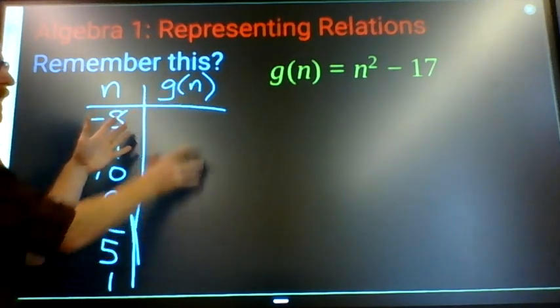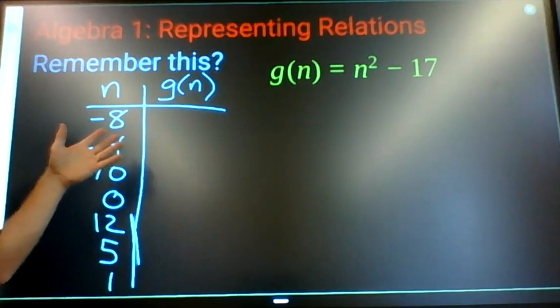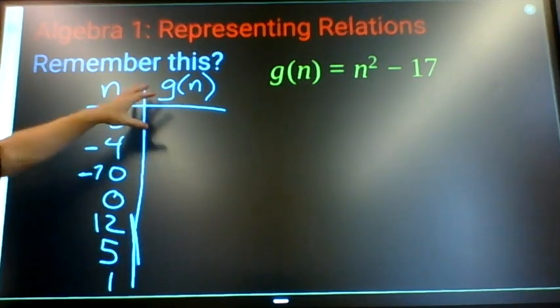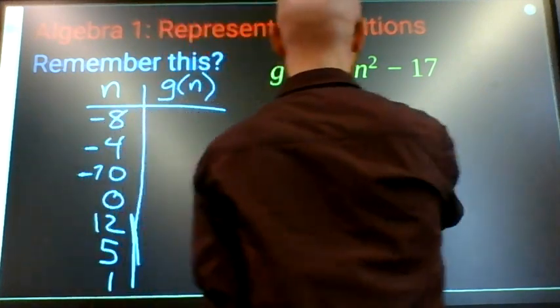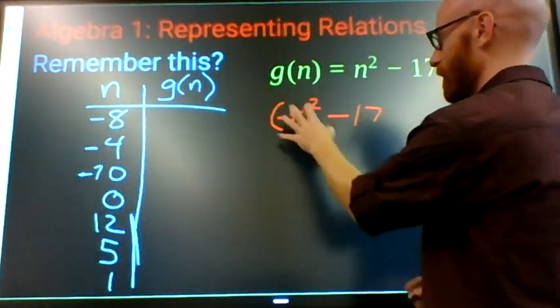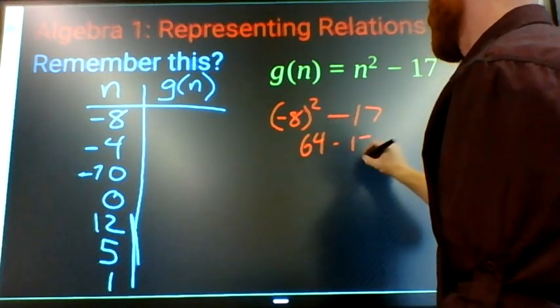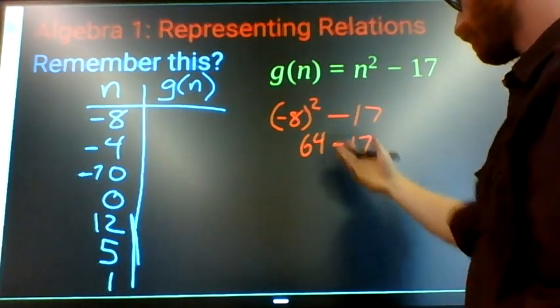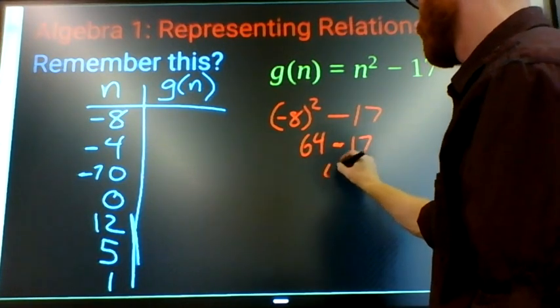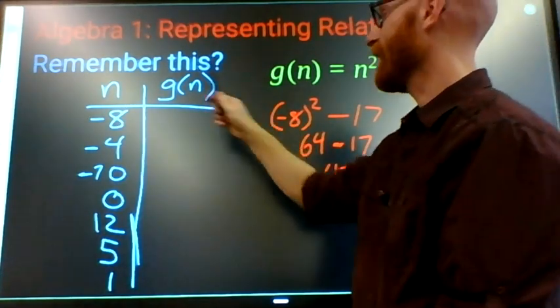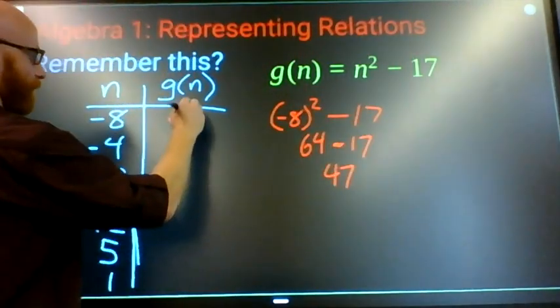Then you apply your rule n squared minus 17 to each of these numbers. So for the first one, negative 8 squared minus 17. 64 minus 17 is 47. When n is negative 8, g(n) is 47.